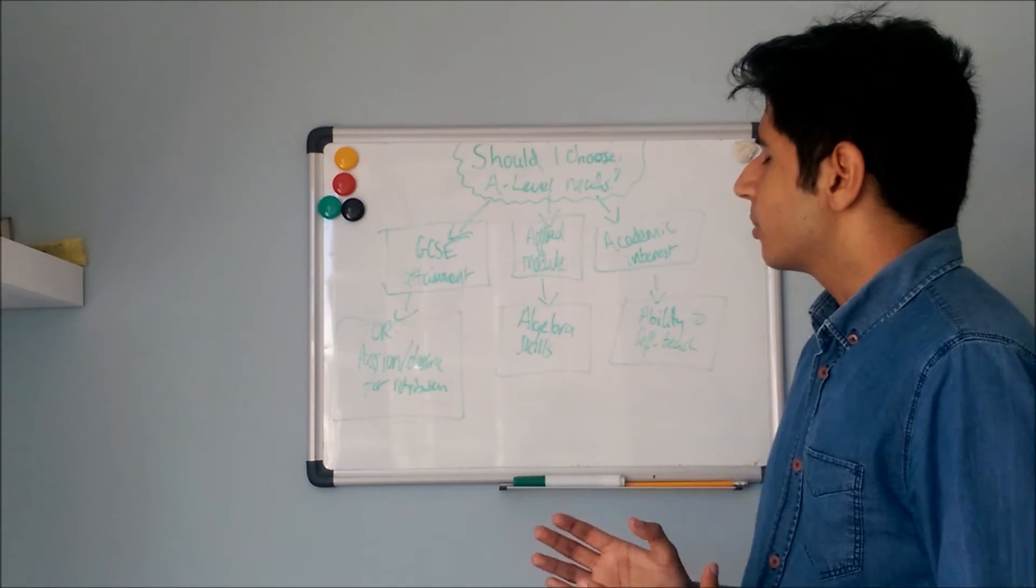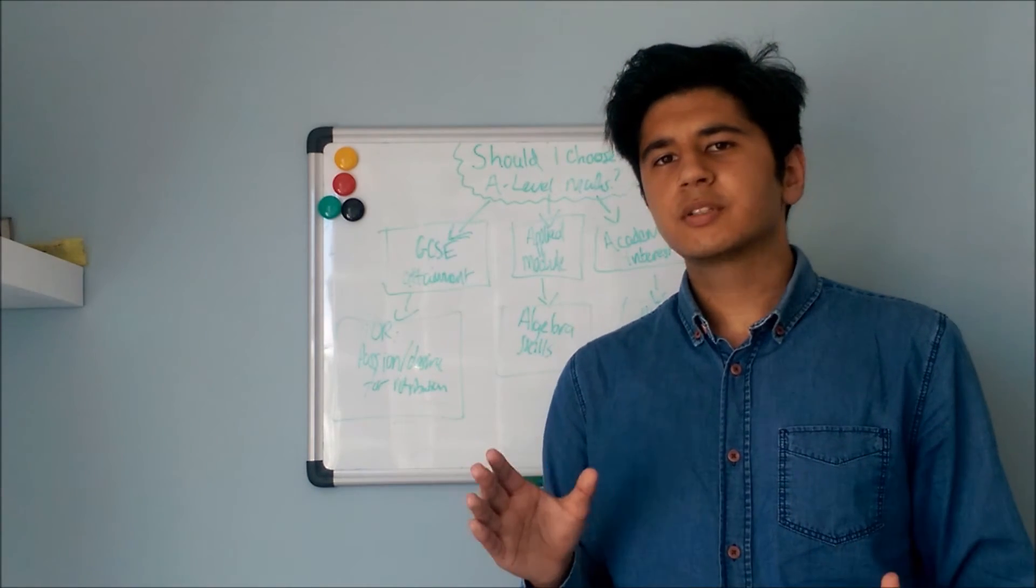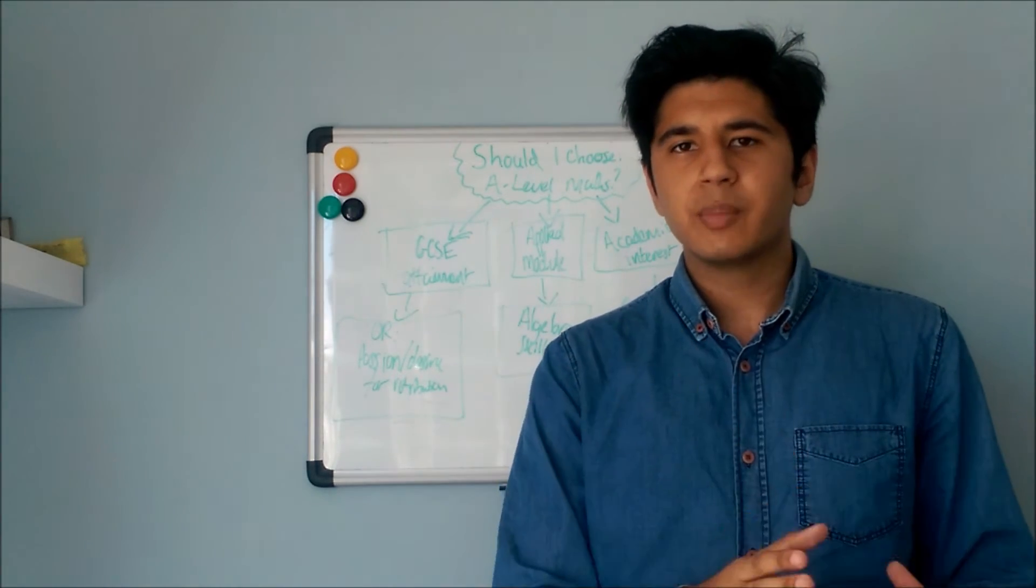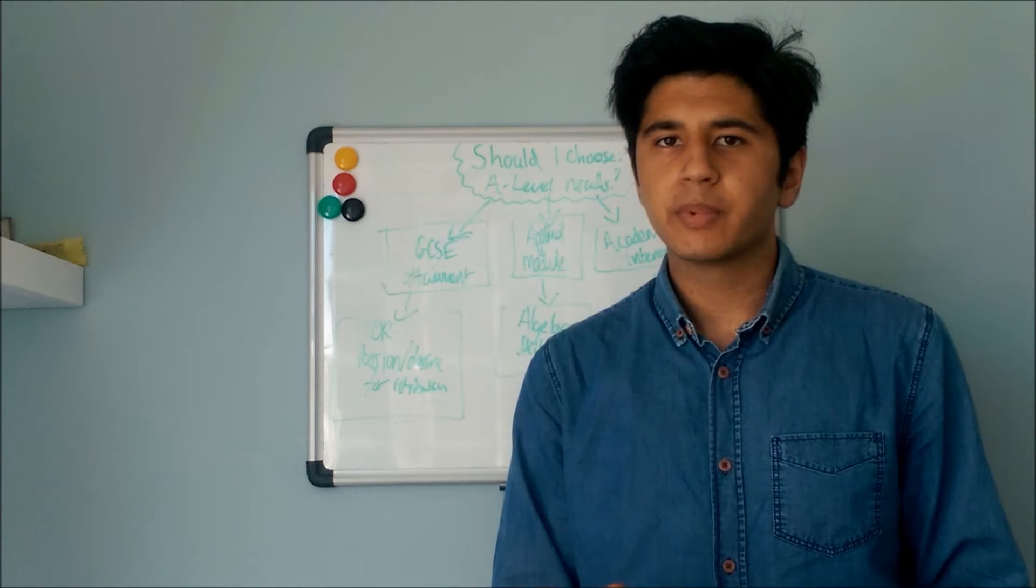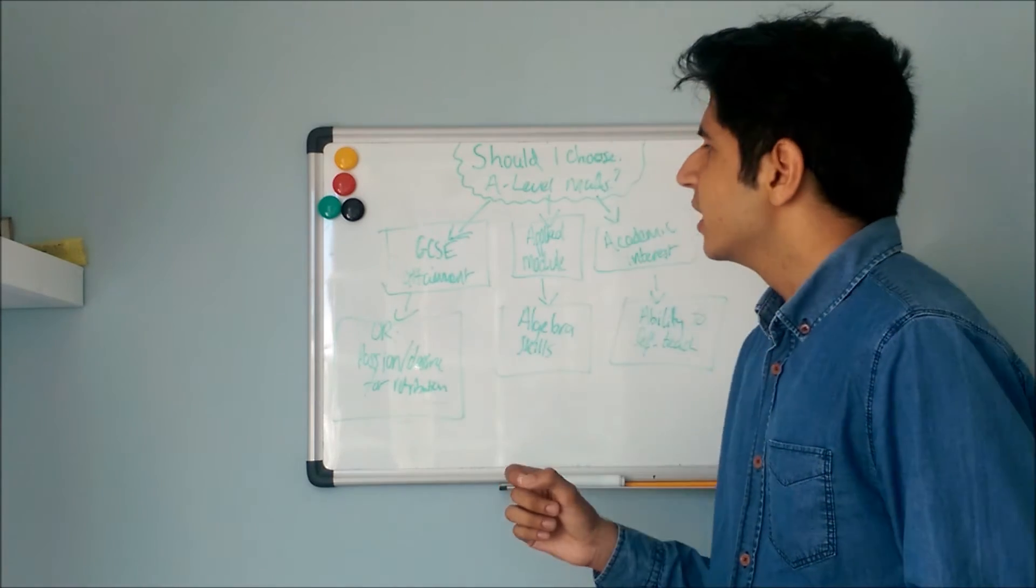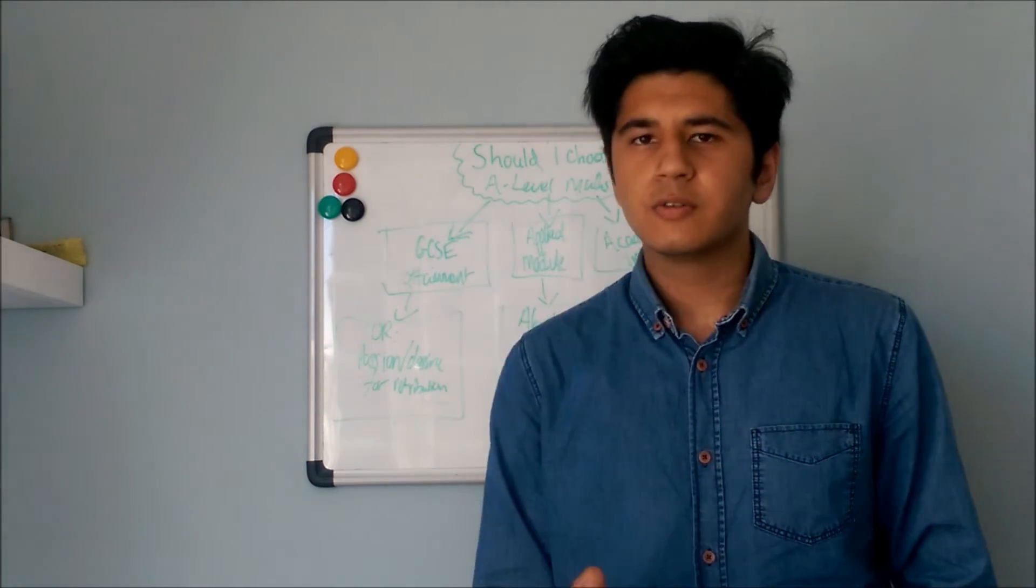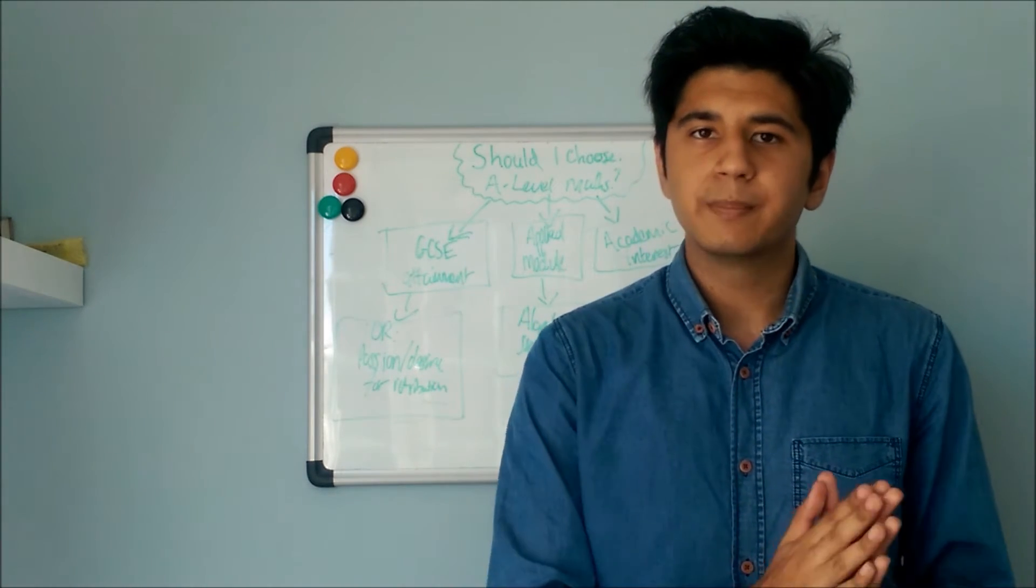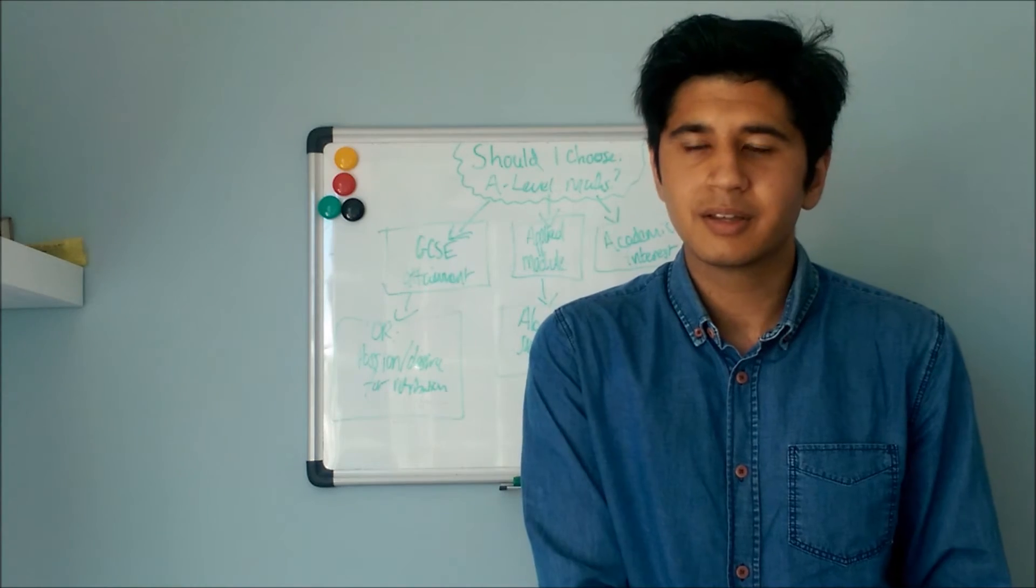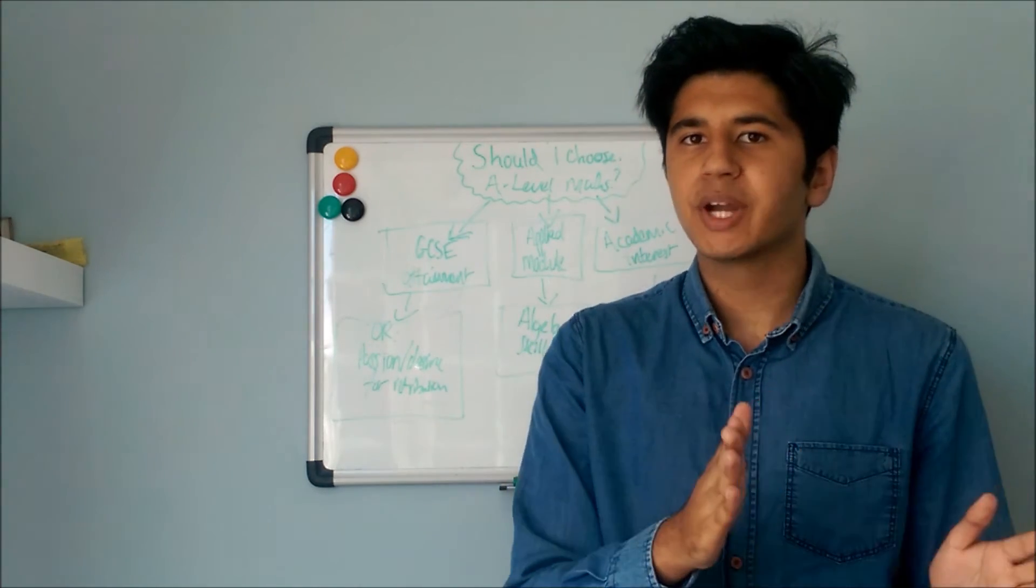People often talk about the jump from GCSE to A-level. But with A-level maths, with AS maths in particular, it's a very big jump. And the reason for that is because in the very first module of AS, they start off at A-star at GCSE. If you start off at a B grade at GCSE and then go on to AS maths, you're going up by two grades already.